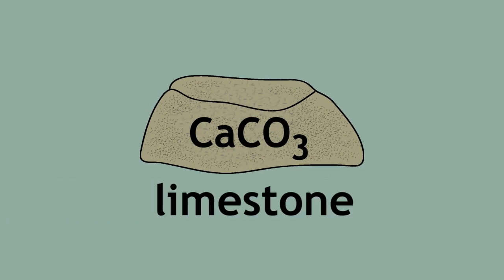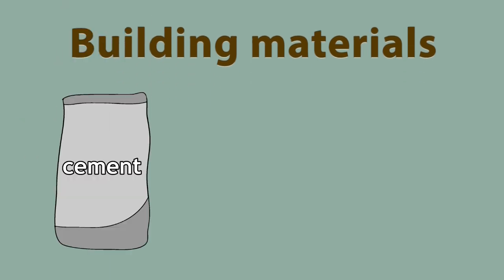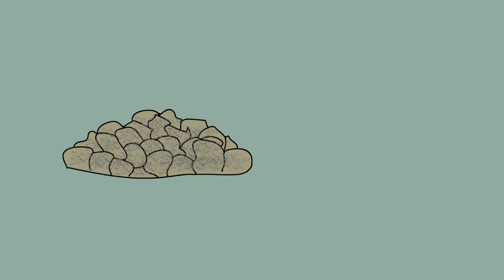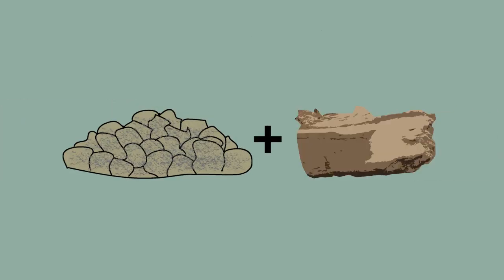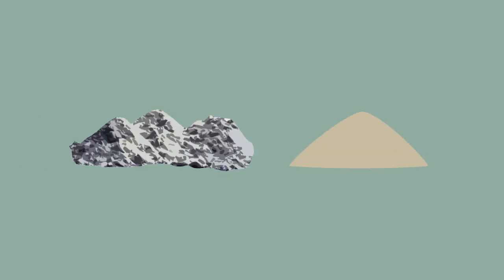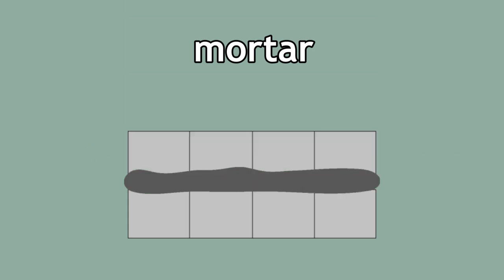Limestone can be used to make other building materials, such as cement, mortar, and concrete. When limestone is crushed and heated with clay in a rotary kiln, cement is made. Cement can be mixed with sand and water to produce mortar, which is used to glue bricks together.